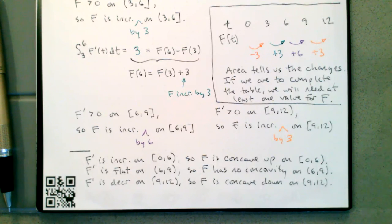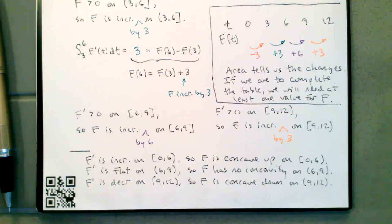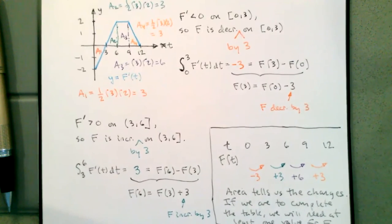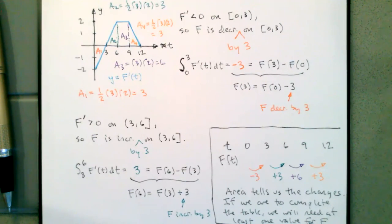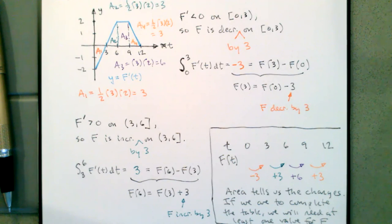Student: On the last part, you wrote down capital F prime — could that mean the entire derivative? Professor: No. F prime is the graph that we're looking at — not the antiderivative — it's the graph shown in this function. F prime is the graph shown here, and this graph is decreasing on the interval from 9 to 12. In the statement we're making about concavity, we're not worried about things like antiderivatives.